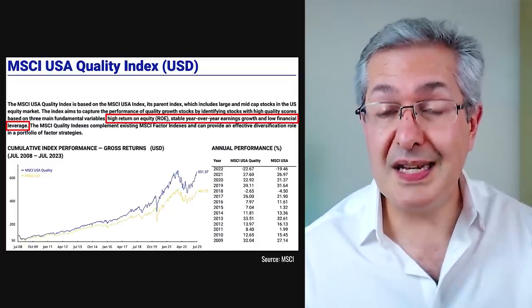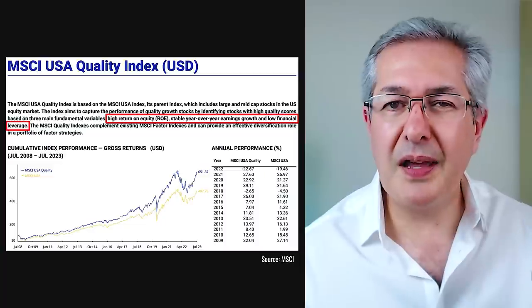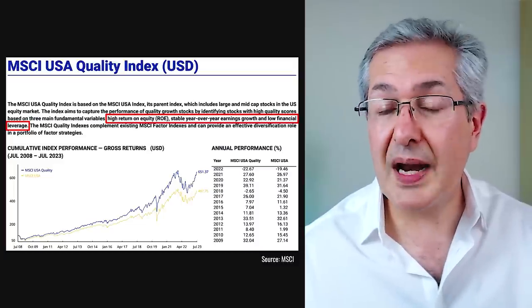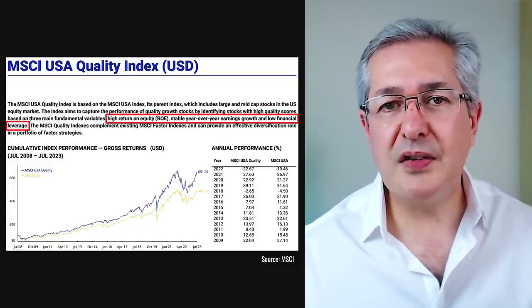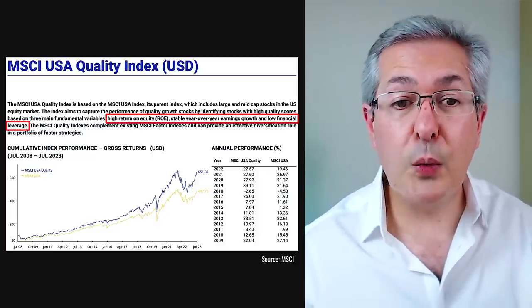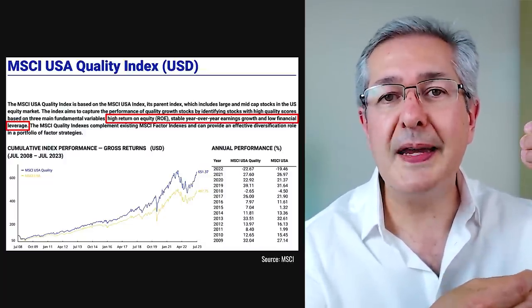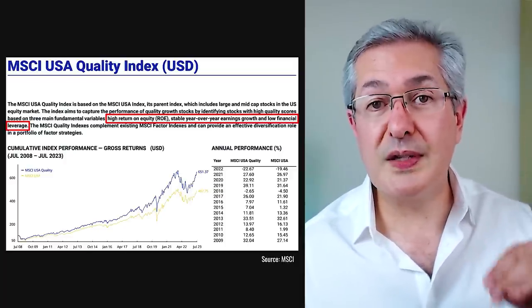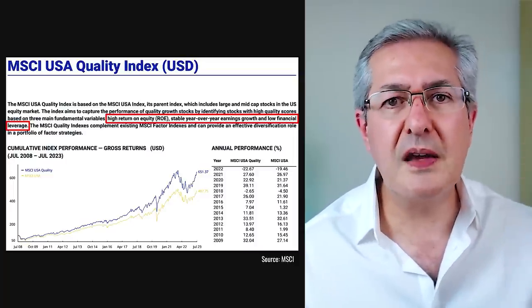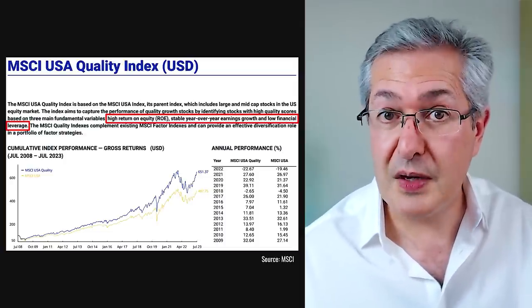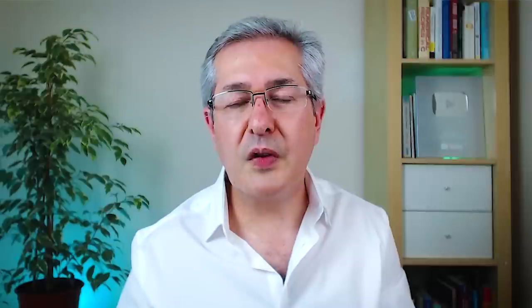Some of these factors can be quantified and mimicked by indices tracked by cheap passive funds. Some of the criteria Fundsmith uses to choose its stocks are captured by a quality factor fund. This is an index created by MSCI and tracked by at least one ETF in the UK. It scores companies on three criteria: return on equity, stable year-on-year earnings growth without volatile profits, and not too much leverage — which is also something Terry Smith looks for. This doesn't capture all of Fundsmith's attributes, but it certainly captures some of them.